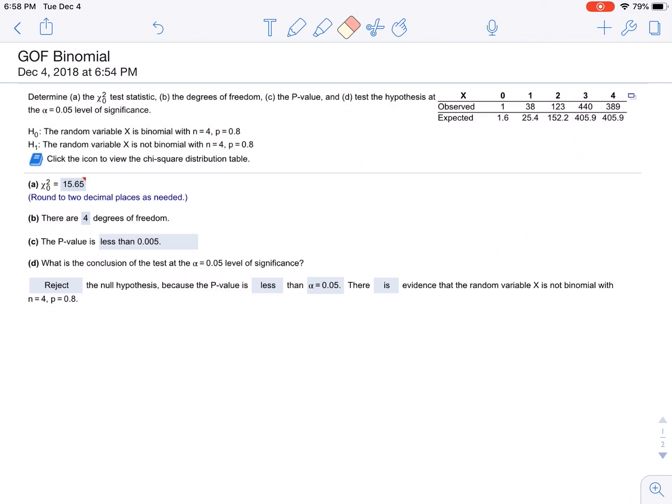All right, here we have a goodness of fit question that's a little bit difficult because it has to do with a binomial distribution. So let's see. Here we have a null and alternative hypothesis. The null is that the random variable X is binomial with n equals 4, p equals 0.8. Alternative, the random variable X is not binomial with n equals 4, p equals 0.8. So we're seeing if something follows some distribution.